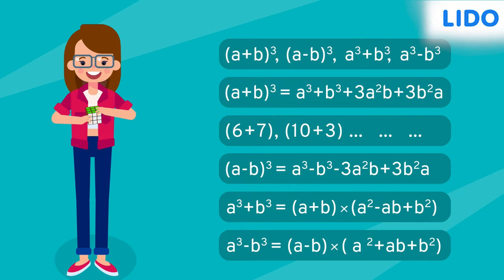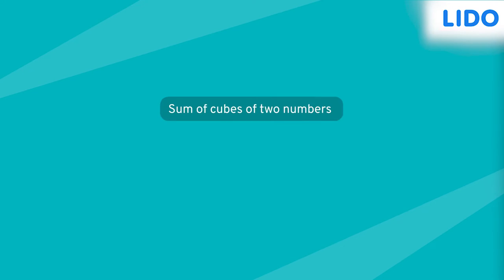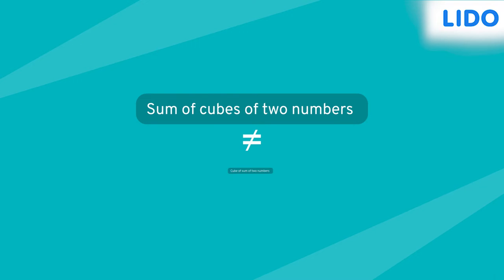Just when Lippi thought she could solve any question, she came across a riddle that read: The sum of cubes of two numbers is not equal to the cube of the sum of the same two numbers.